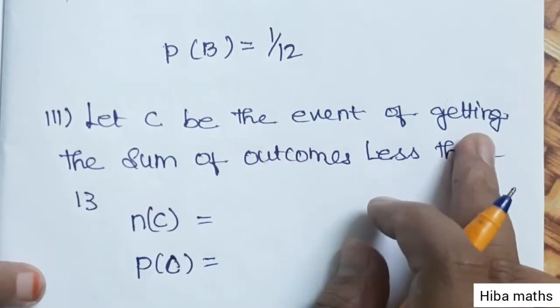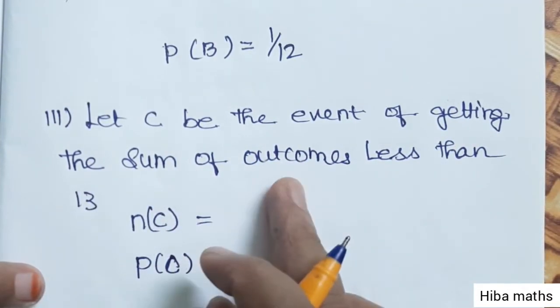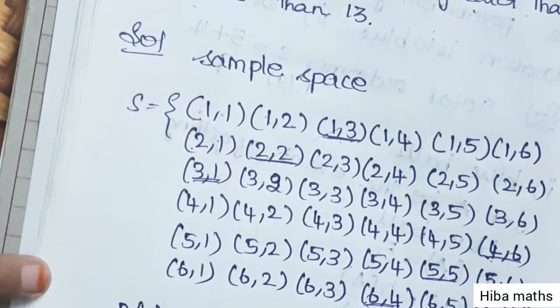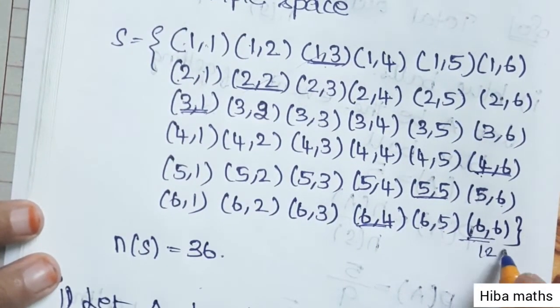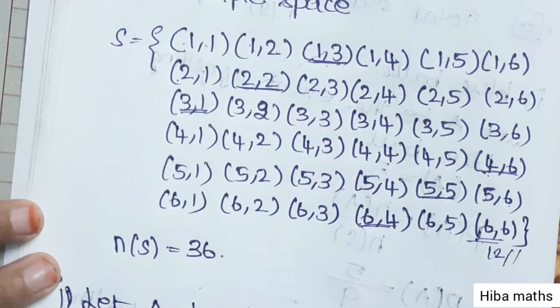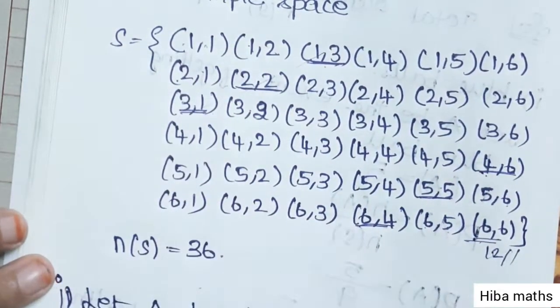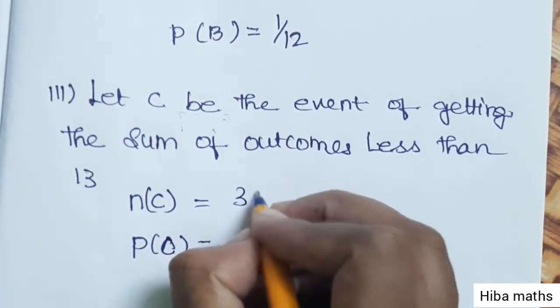Part (iii): Let C be the event of getting the sum of outcomes less than 13. Now the maximum outcome is 6 plus 6 which equals 12.